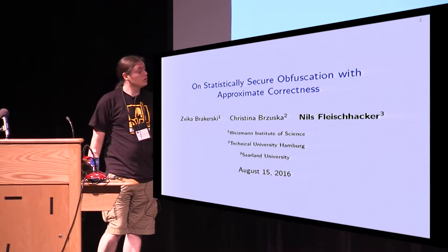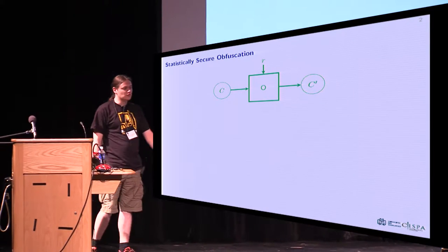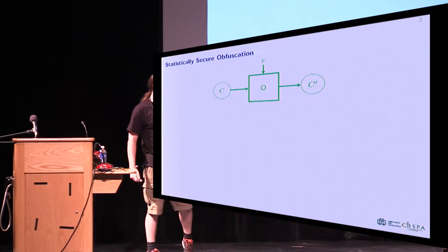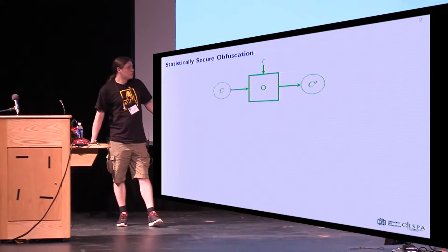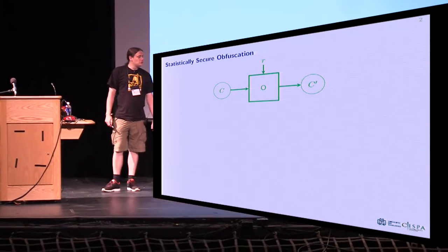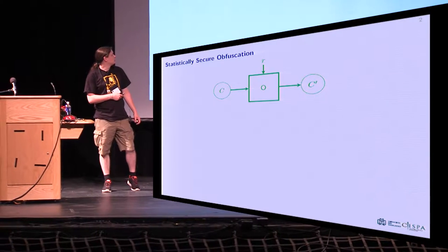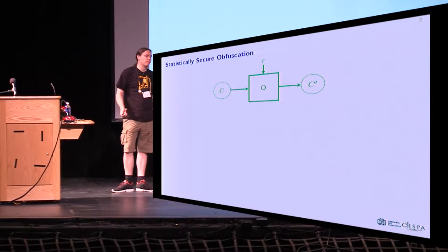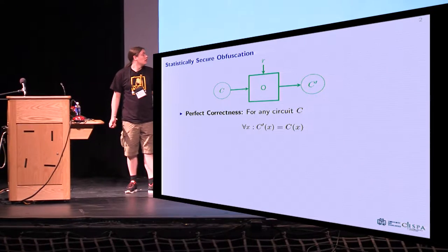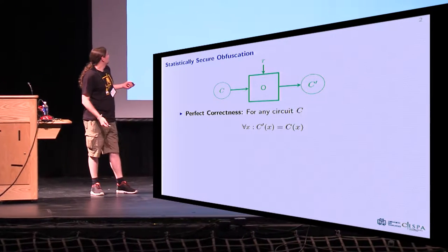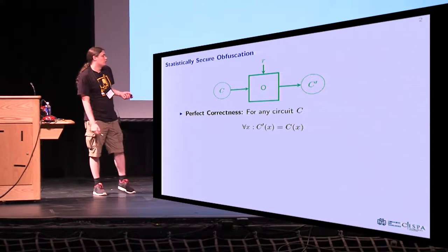When talking about statistically secure obfuscation with approximate correctness, the first obvious question is: what is statistically secure obfuscation? As a very short reminder, an obfuscator is basically just a program that gets as input a circuit C and probably some randomness, and outputs another circuit C prime. What you would usually want is perfect correctness, meaning that the output circuit should be functionally equivalent to the input circuit.